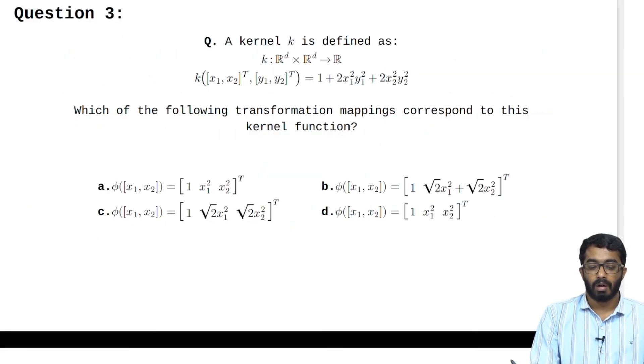Question number 3: A kernel k is defined as R^d cross R^d to R, which of the following mappings correspond to this kernel function. So we are given 4 explicit mappings. The best way to solve such questions is to use the options themselves and the explicit mapping to kernel function output is given by phi(x) transpose phi(x).